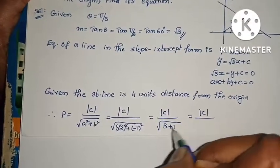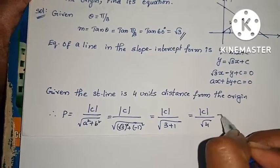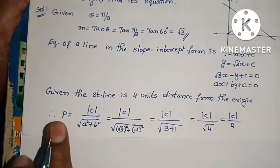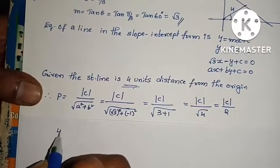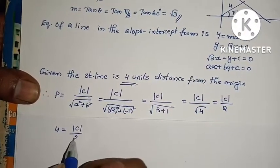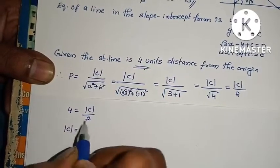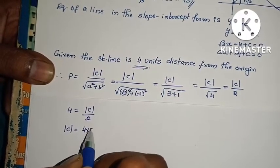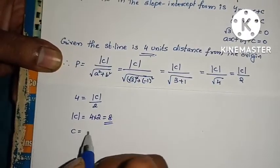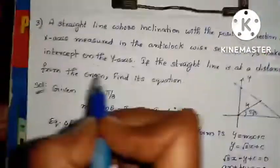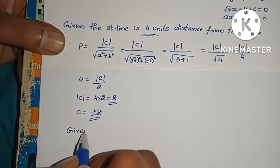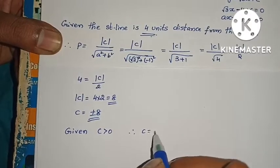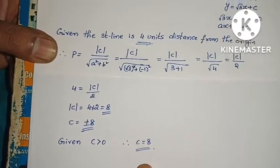Substituting: |c| / √(3 + 1) = |c| / √4 = |c| / 2 = 4. Therefore |c| = 8, so c = ±8. Since the question states there is a positive intercept on the y-axis, c > 0, therefore c = 8.